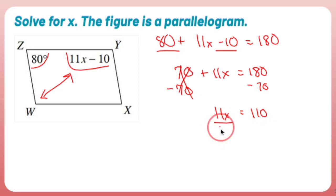In order to get x all by itself, divide both sides by 11, and x equals 10.